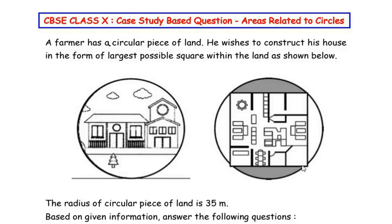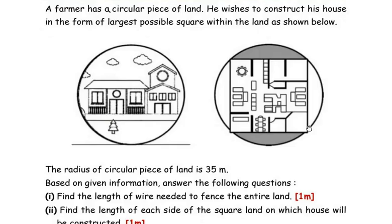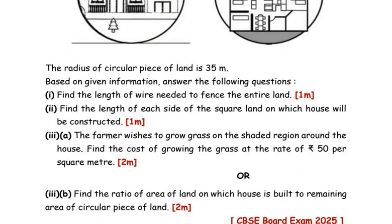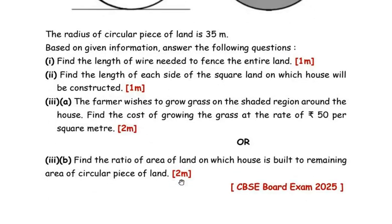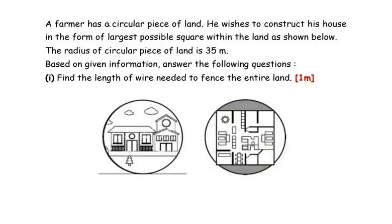Hello and welcome to my channel. In this video we are going to solve a case study based question from the Areas Related to Circles chapter, which appeared in the CBSE board exam 2025. This question has three sub-questions: the first and second are for one mark each, the third is for two marks, and it also has an OR question. A farmer has a circular piece of land and wishes to construct his house in the form of the largest possible square within the land. The radius of the circular piece of land is 35 meters.